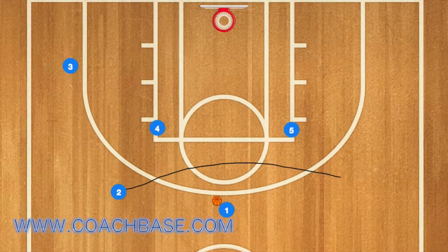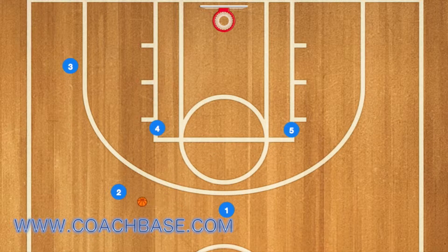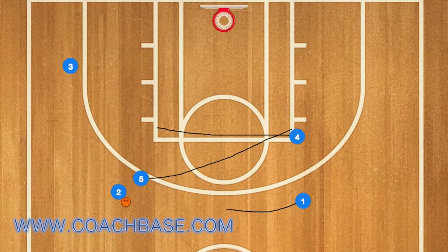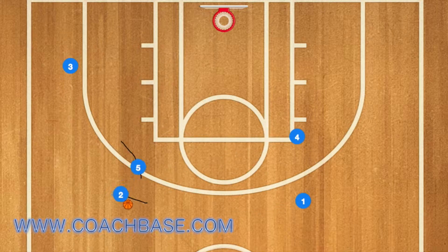In this first play, player 2 will do a high cut, and then player 1 will pass player 2 the basketball. At this time, player 5 will screen for 2, 4 will go to the right post, and 1 will move over to the top of the key.